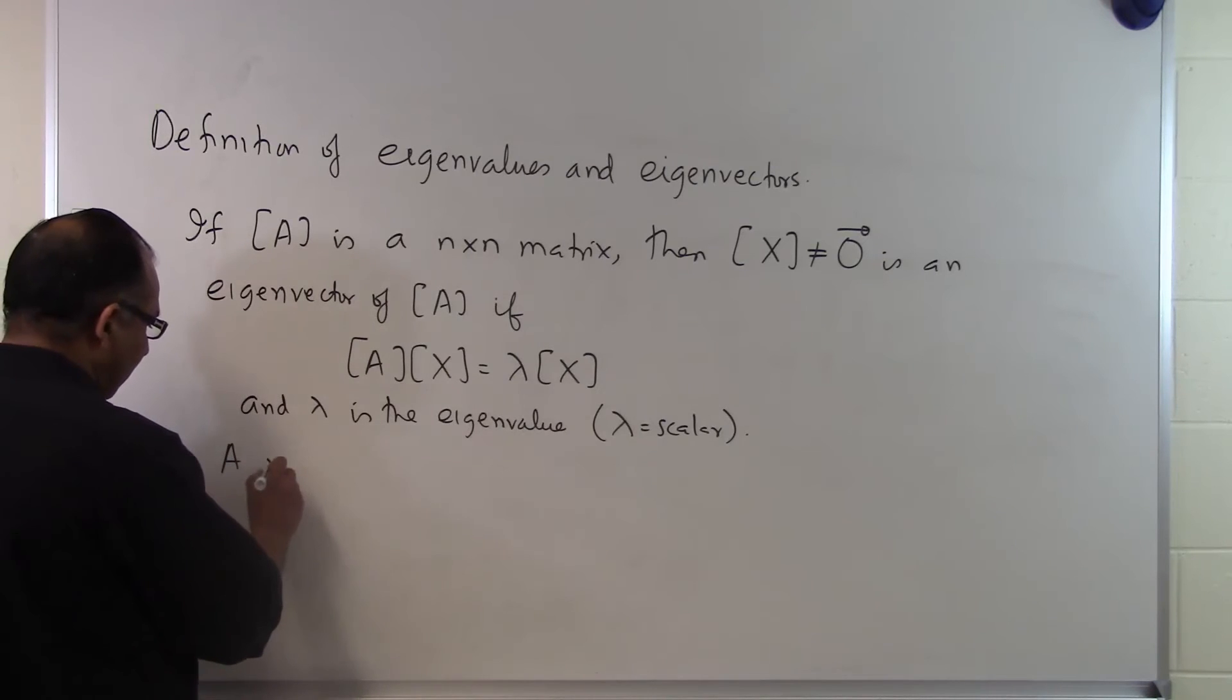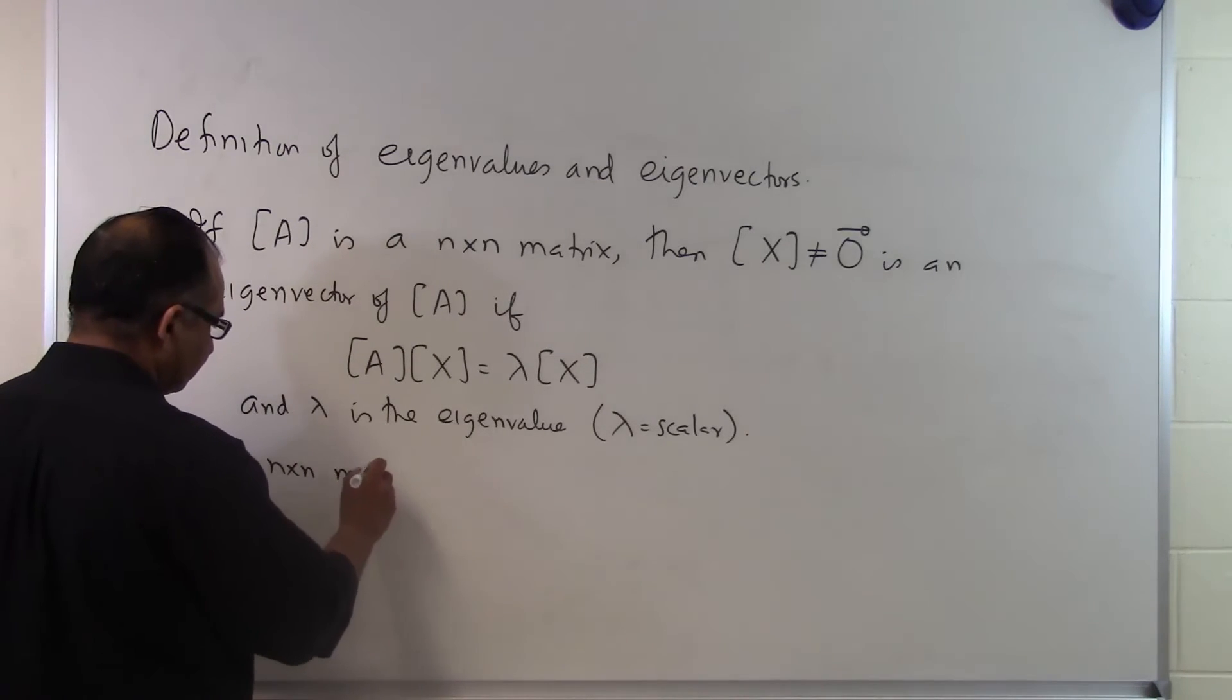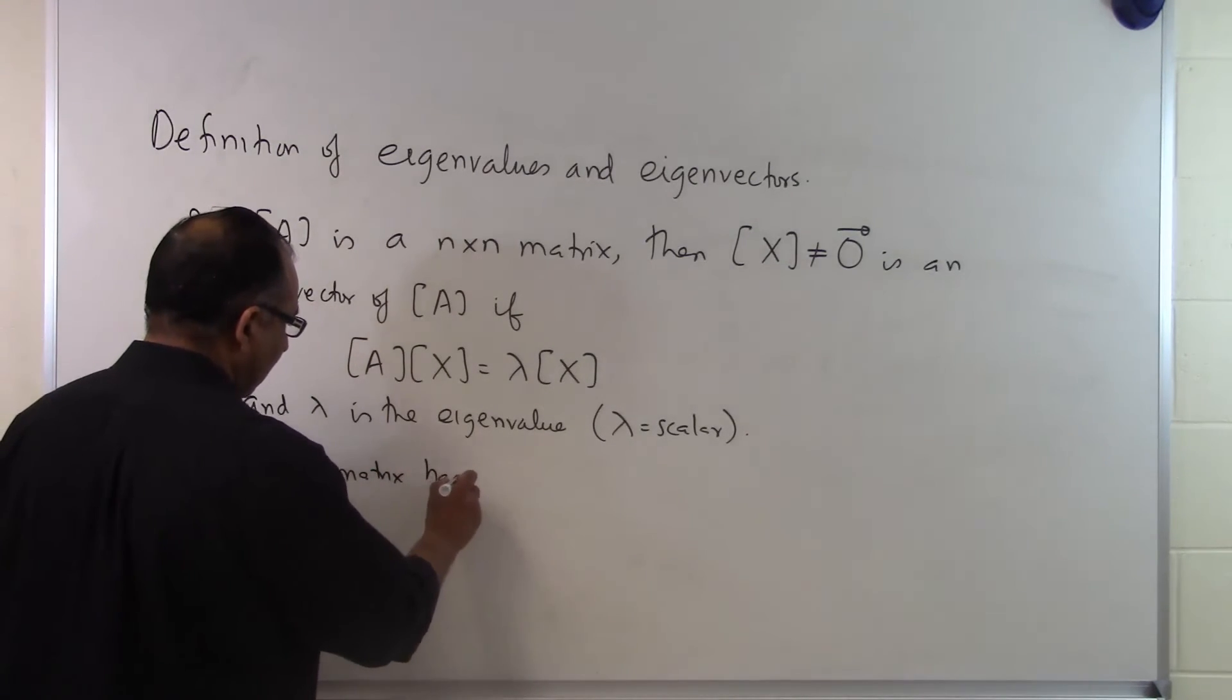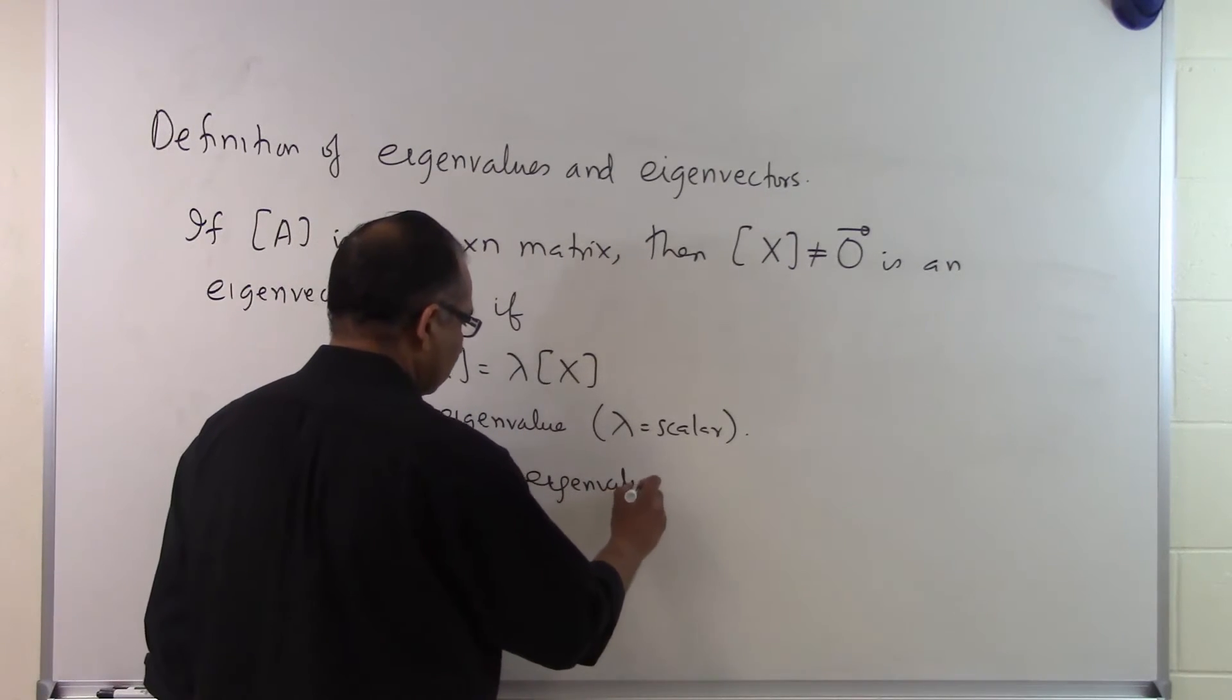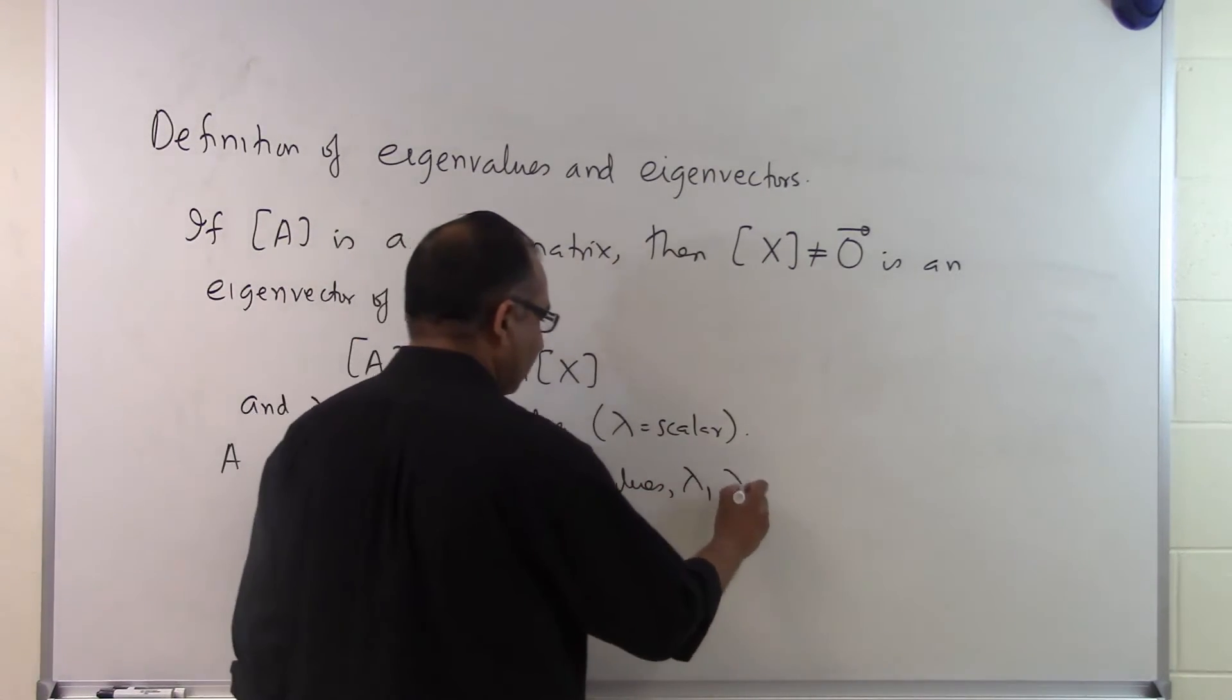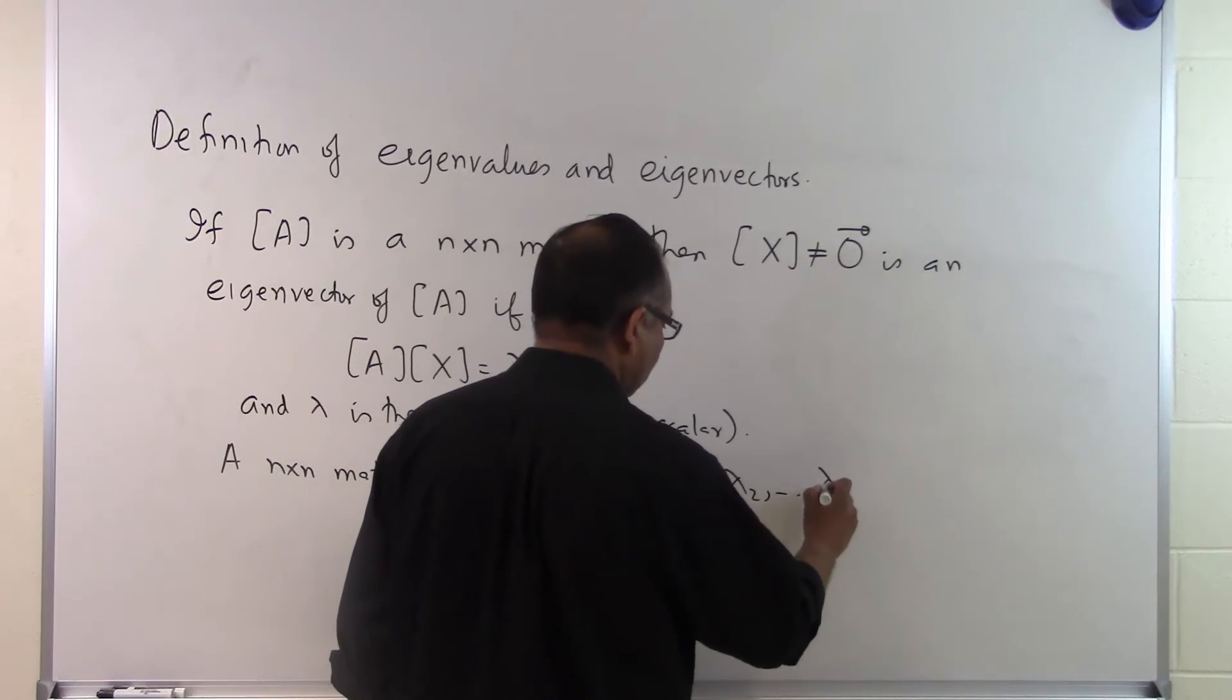So an n by n matrix has n eigenvalues which we may call as lambda 1, lambda 2, all the way up to lambda n.